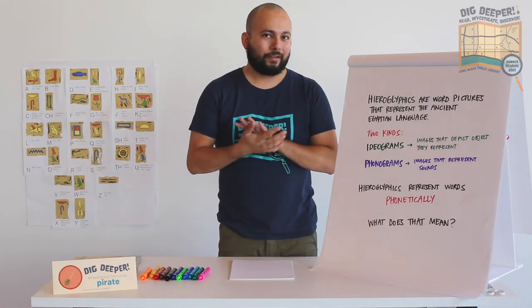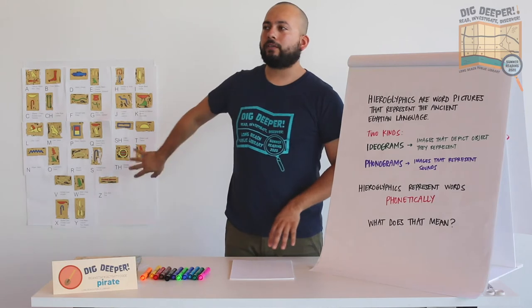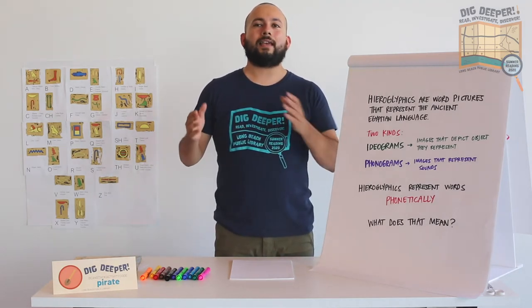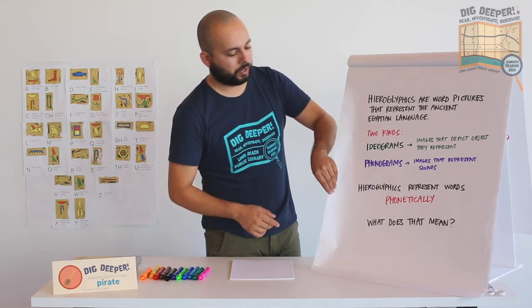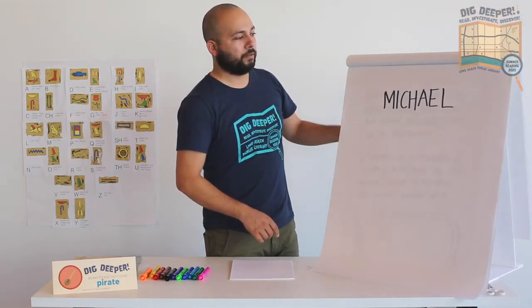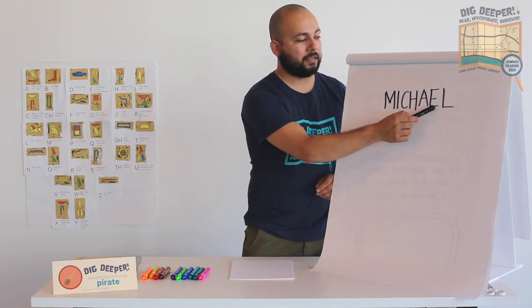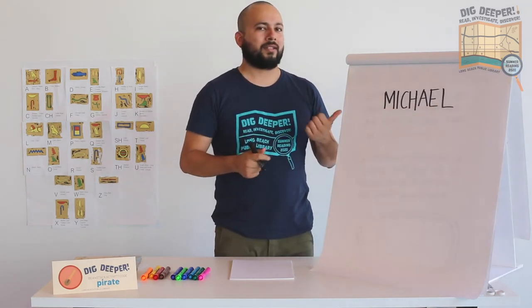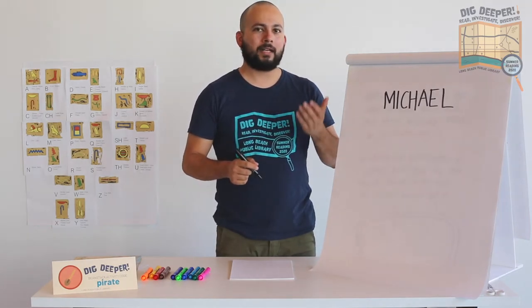Hieroglyphs represent words phonetically. And so what does that mean? It means that hieroglyphs are used to actually spell out phrases based on the sounds in those phrases. So I'll describe to you in a little bit more detail. For example, the name Michael in English is spelled M-I-C-H-A-E-L. But it's not really pronounced that way, is it? It's pronounced M-I-K-O.